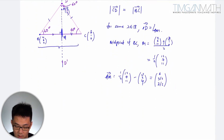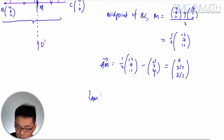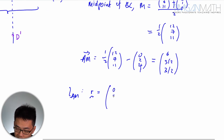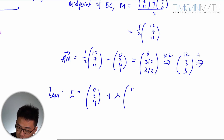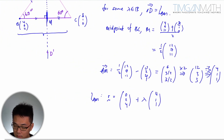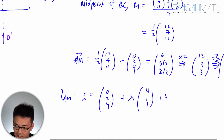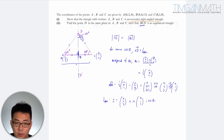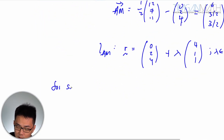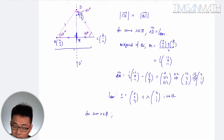Direction vector AM is (1/2)(12, 7, 11) minus OA which is (0, 2, 4), giving (6, 7/2 − 2, 11/2 − 4) = (6, 3/2, 3/2). So the line AM is: r = (0, 2, 4) + λ × (4, 1, 1), scaling the direction vector. This is the line equation. For some real lambda, OD takes this line equation.